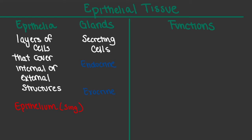If we investigate the word endocrine, the first part, endo, refers to the term inside. And then the ending of this word, crin or crinon, actually means to secrete. So if we combine these terms back together again, if we hear the word endocrine, it means that there is a group of cells that are secreting something inside of something else.